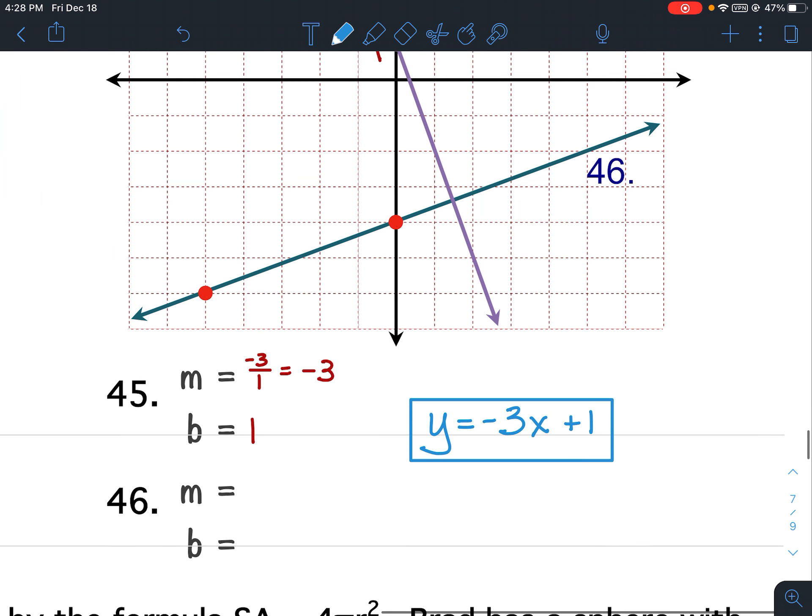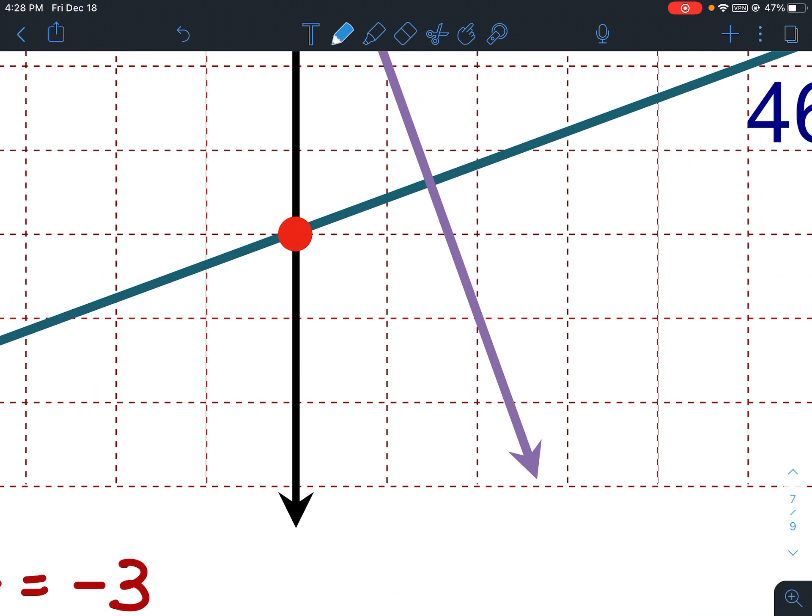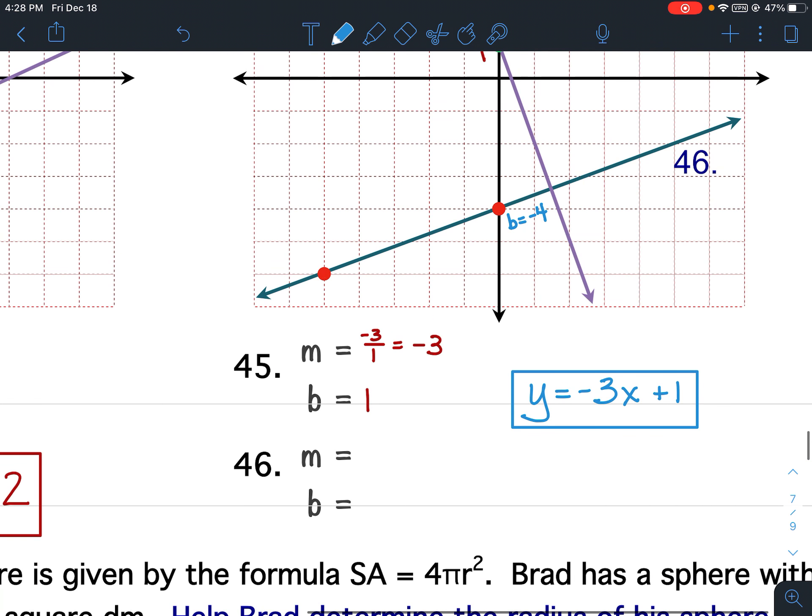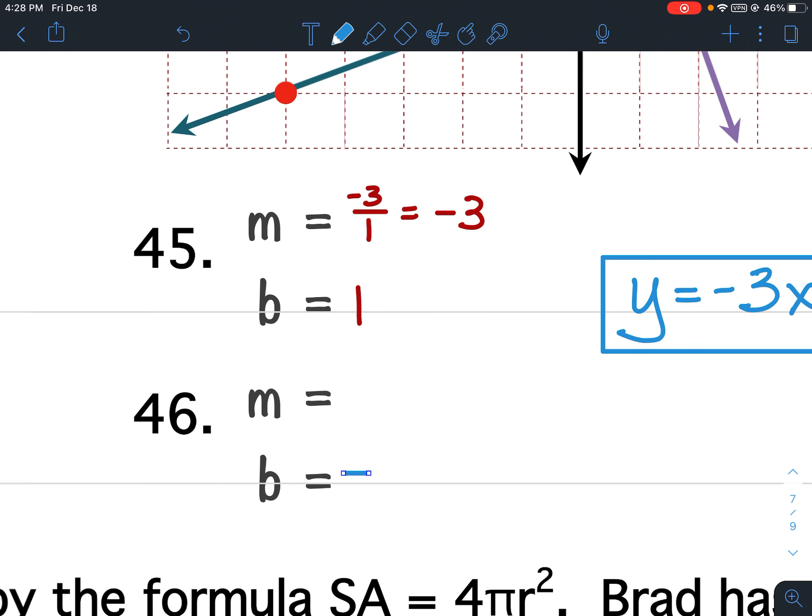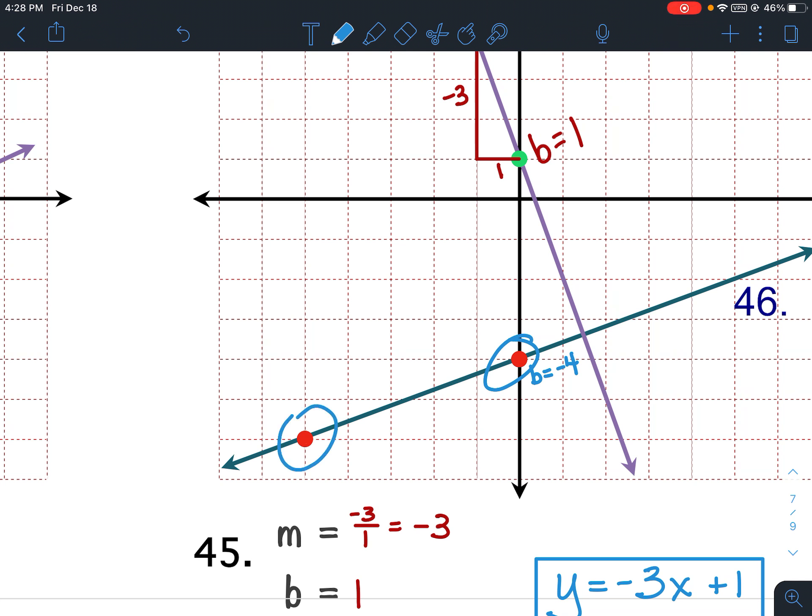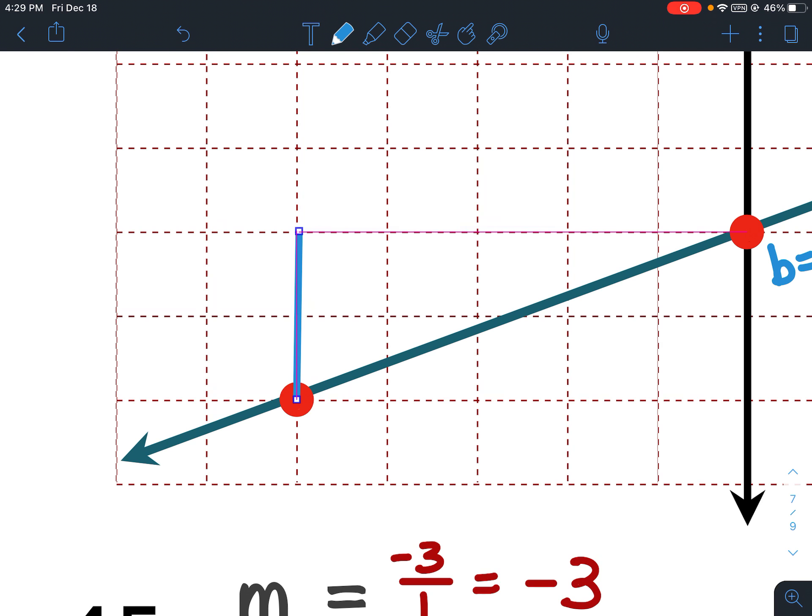All right, 46. 46, this is my y-intercept. So it's negative 1, negative 2, negative 3, negative 4. So this would be negative 4. And my y-intercept, notice how I already put these two points. It's going up. And it's going to the right. So it goes up 1, 2. My rise is 2. And the run is 1, 2, 3, 4, 5.